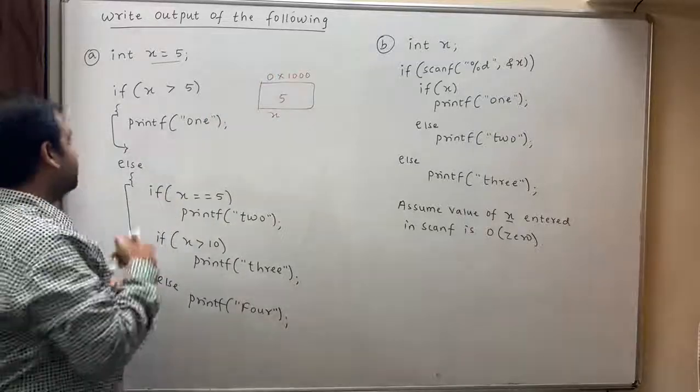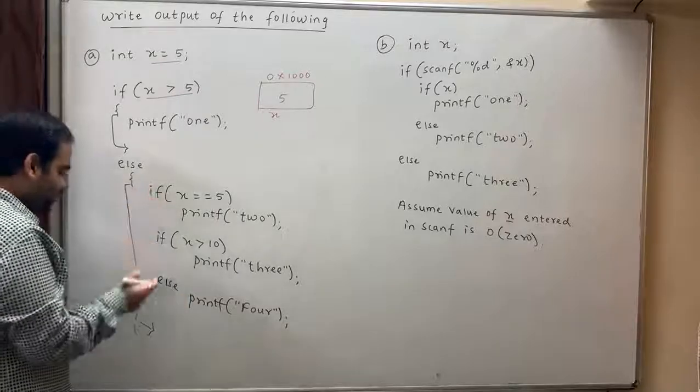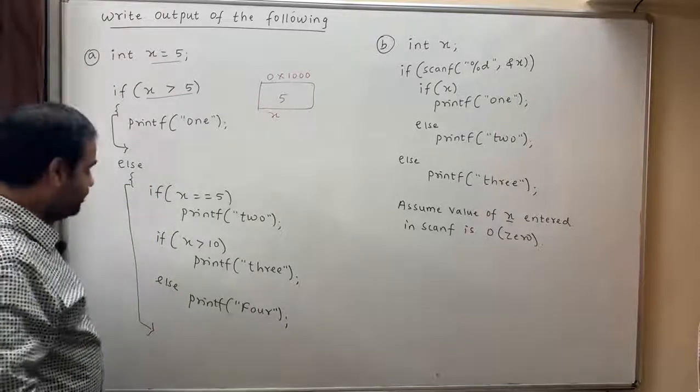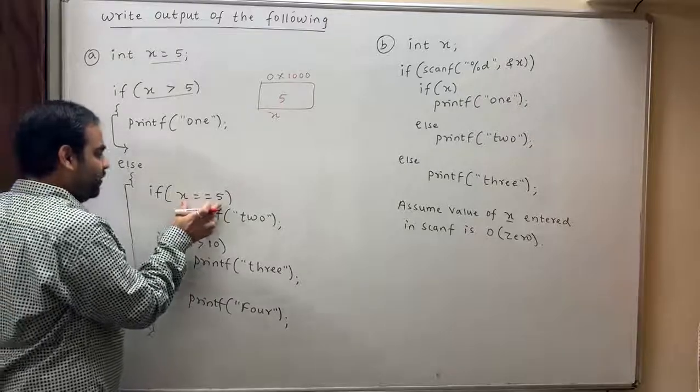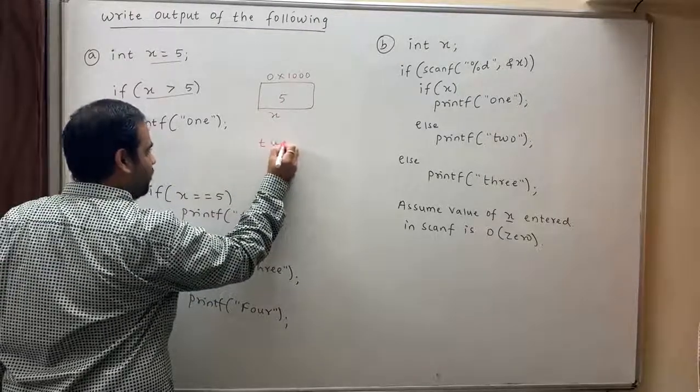You first check the condition over here: 8 greater than 9 is false. Since it is false, you come to the body of else. The body of else should be executed. 8 equal equal 5, yes it is true. Therefore, it will print 2 as the output.